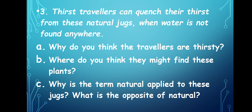Why is the term 'natural' applied to these jugs? What is the opposite of natural? Things we find in nature — trees, rivers, mountains — are all natural, and the pitcher plant is also a part of nature. No man has made these jugs; they just happen naturally. The opposite of natural is artificial. For example, plastic mugs are artificial things, whereas the jug-shaped leaves of the pitcher plant are natural.